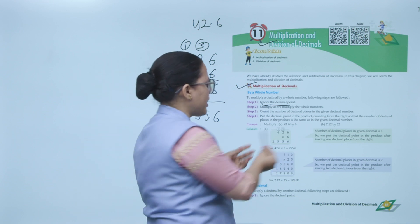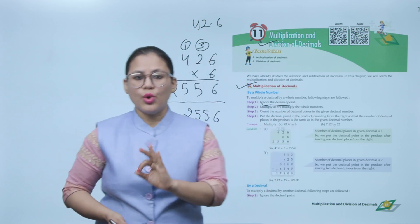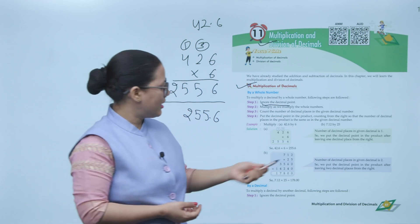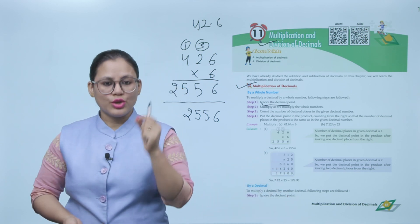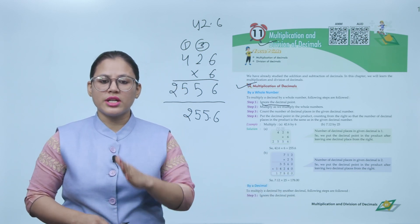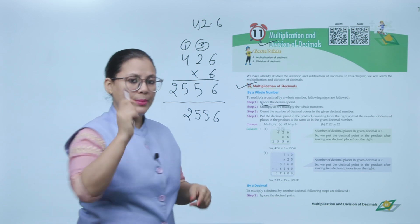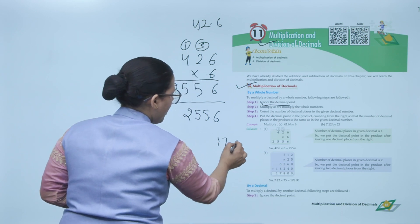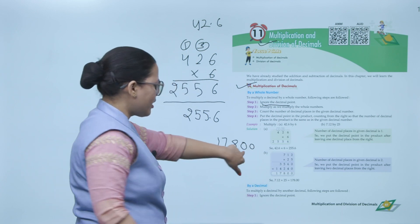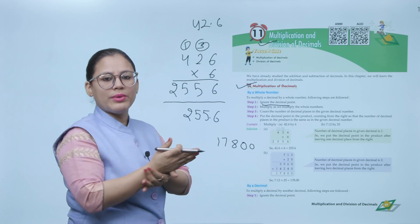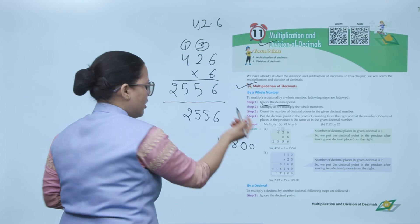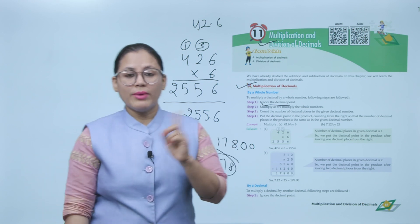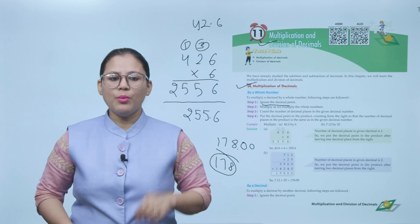Now for the second example, the given decimal has two decimal places. So the number of decimal places in the given decimal is two, and we put the decimal point in the product after leaving two decimal places from the right. When you multiply and get the product 17800, count two places from the right: one, two — so the answer is 178.00.